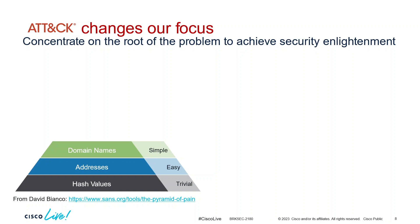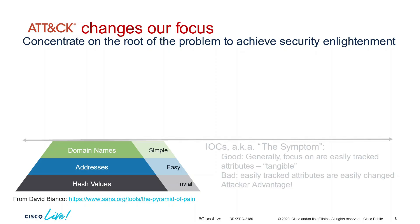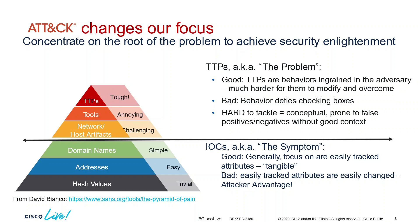Let's talk about the Pyramid of Pain. We've been focused on low-level indicators like hash values, IP addresses, and domain names — and we still need to do this — but the adversary can very quickly change a hash, an IP, or a domain name. As you move higher up the stack, it becomes very difficult for the adversary to overcome, invoking pain on them. The goal is to move up to the TTP level — tactics, techniques, and procedures — to build the right defensive capabilities.